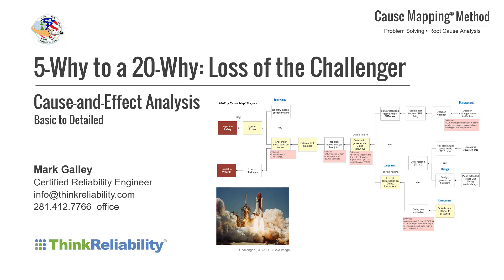This is an example of how the analysis for a complex problem — in this case the Challenger disaster — can begin simple with three to five why questions and then expand as information becomes available. We'll go up to a 20 why. I'll be demonstrating our cause mapping method for investigating and preventing problems.